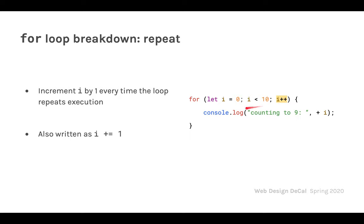So when the loop starts at i = 0, since 0 < 10 we run console.log. Then i becomes 1, still less than 10, so we run again. This continues until i = 9. After printing at i = 9, we add 1 to get 10. Since 10 is not less than 10, the loop stops. We then continue running whatever code is below the for loop.